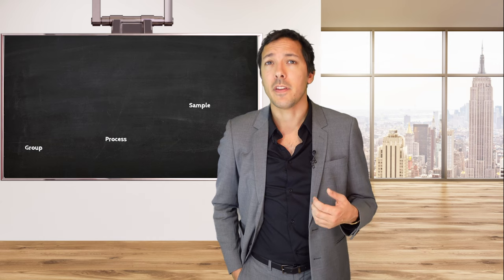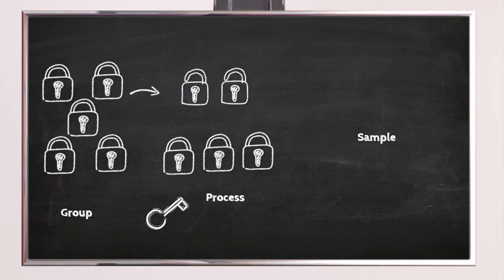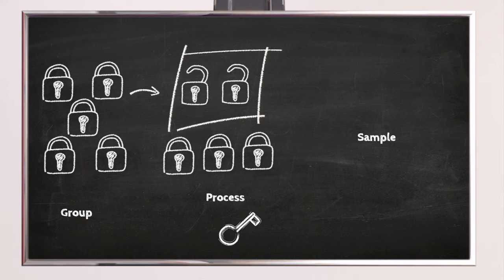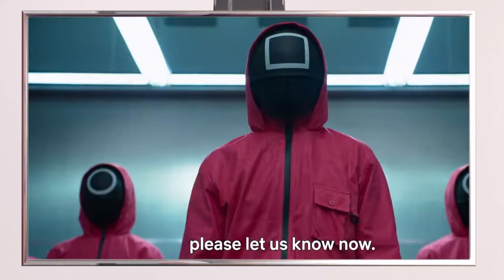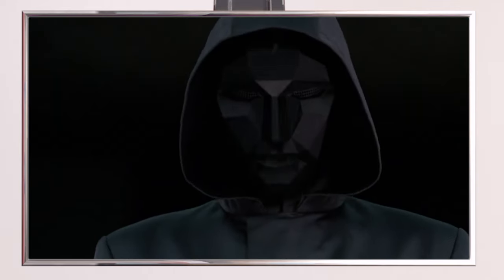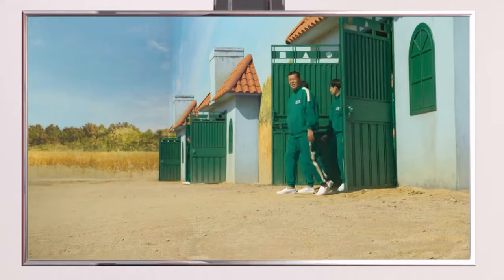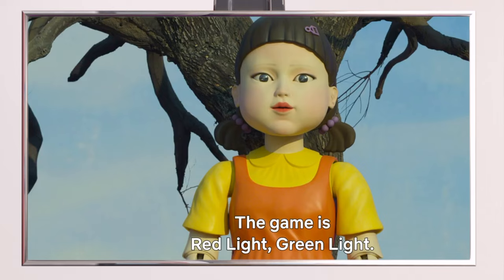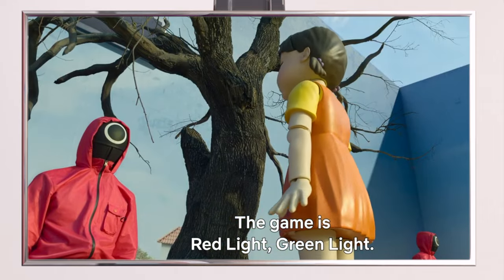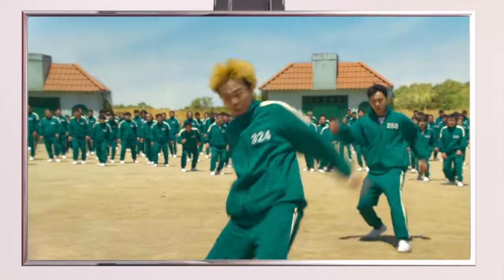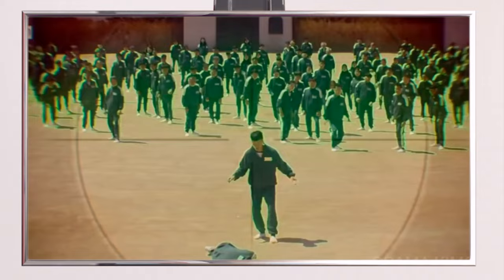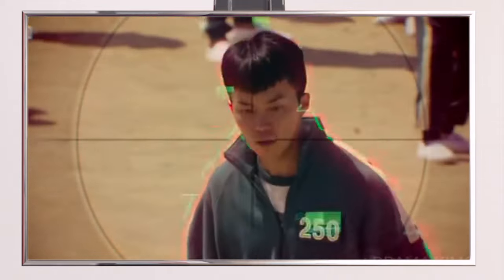The survivorship bias is an error in a logical analytical process. It leads to drawing conclusions based on those who have survived the process and are therefore more visible than those who did not. Let's take the example of Squid Game, a show in which a mysterious organization recruits players into a survival game, eliminating candidates round after round. The survivorship bias is the logical equivalent of analyzing only the candidates in the last round and making inferences for the whole original cohort.